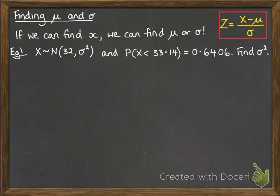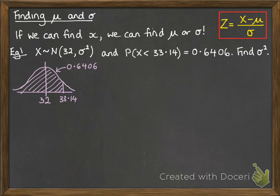Here's our example. We're told that x follows a normal distribution with mean 32 and standard deviation sigma. We're told a probability, and we need to find sigma squared. So we've got the curve, and this is the information we're being told, that the probability that x is less than 33.14 is 0.6406.